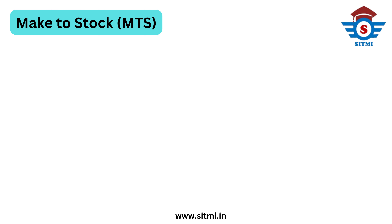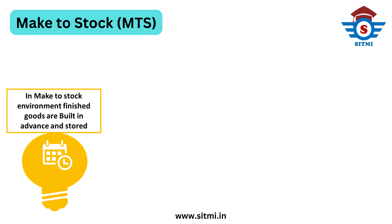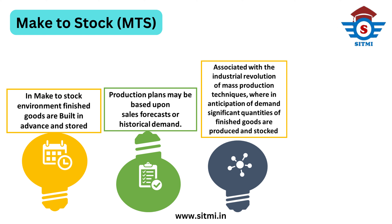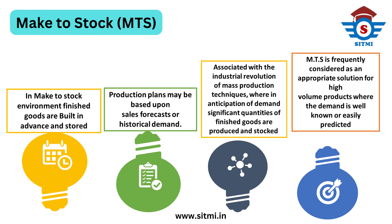The first strategy is Make to Stock. In a Make to Stock environment, finished goods are built in advance and stored even before a customer order is received. In such a pre-manufacturing production environment, production plans are based upon sales forecast or historical demand. Make to Stock is usually associated with the industrial revolution of mass production techniques, where significant quantities of finished goods are produced and stocked in stores or warehouses in anticipation of future demand.